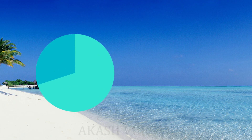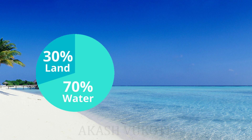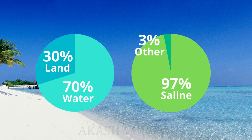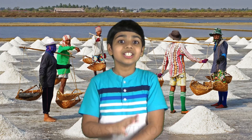Oceans cover about 70% of the Earth's surface. About 97% of all water on the Earth is saline, which means most of the water on the Earth is salty. By some estimates, if all the salt in the ocean — all of it — is removed and spread evenly all over the Earth's land surface, it would form a layer more than 500 feet tall.